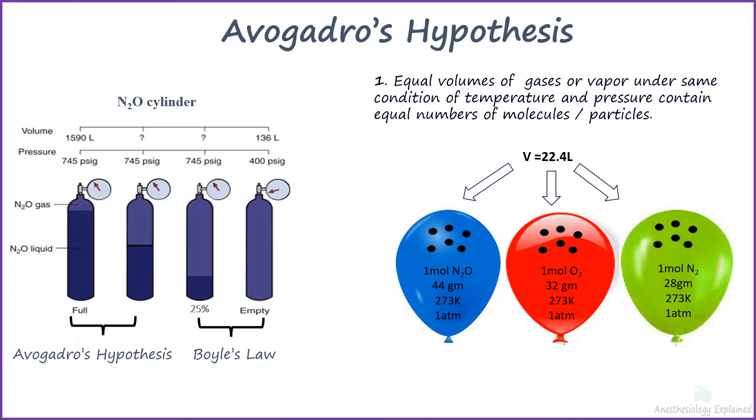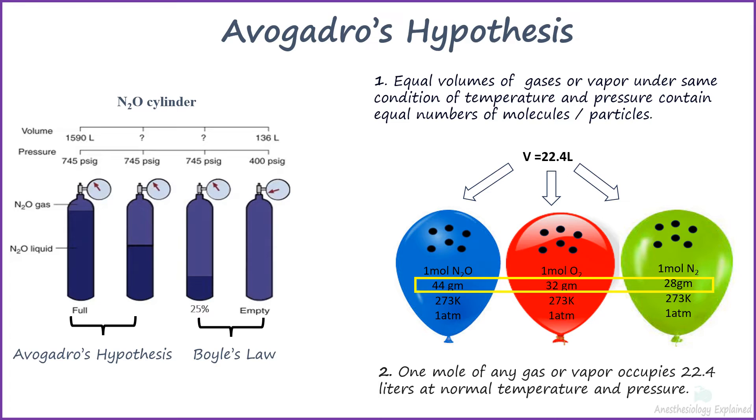The hypothesis also states that 1 mole of any gas or vapor occupies 22.4 liters at normal temperature and pressure. In other words, 44 grams of nitrous oxide, 32 grams of oxygen and 28 grams of nitrogen occupies 22.4 liters. These weights are the molecular weight of 1 mole of aforementioned gas.